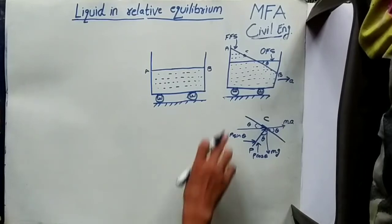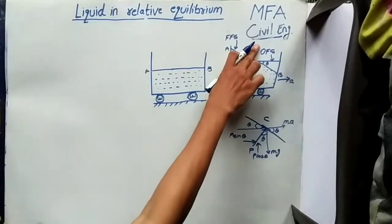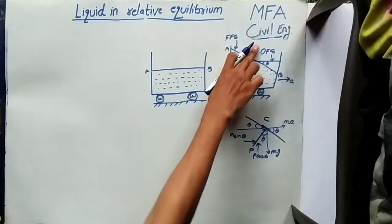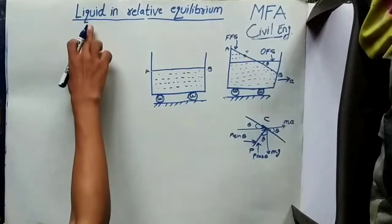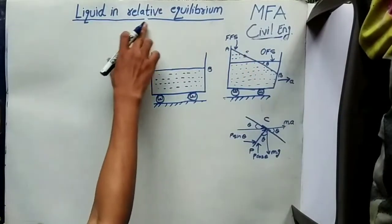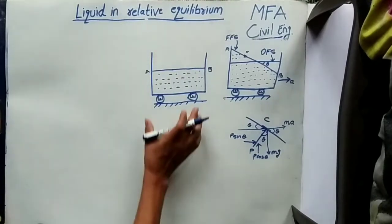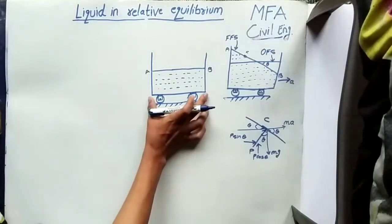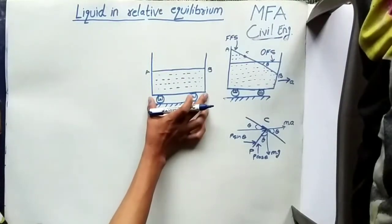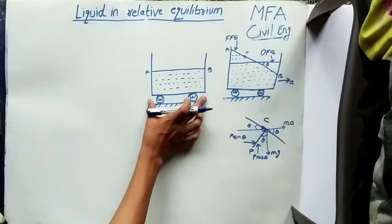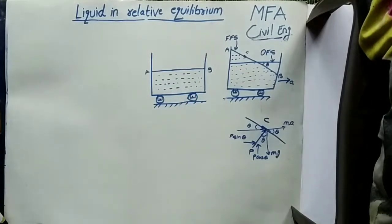Hello everyone, my name is Fazal and you are watching MFA Civil Engineering. The topic is Liquid Relative Equilibrium. Basically we are going to learn about the pressure force acting on the boundary of a container which contains a fluid, where the container is allowed to move with a constant acceleration either in a vertical or horizontal direction.